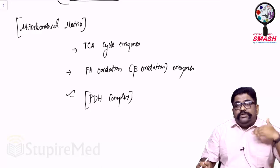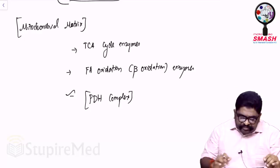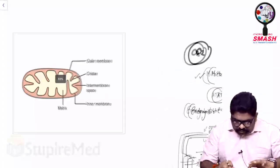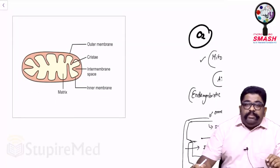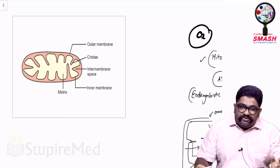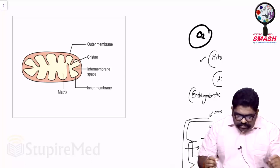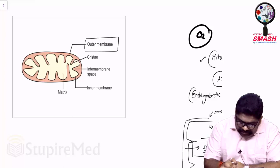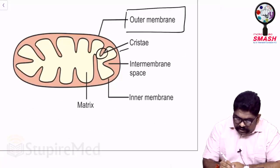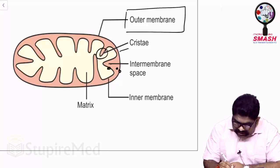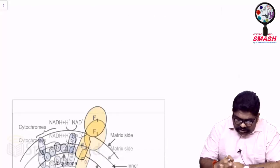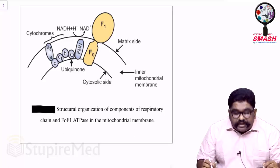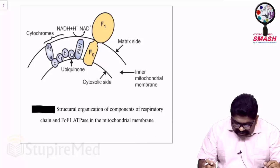Once you get the hang of the topic, you can introduce new information and expand it as widely and deeply as possible. Now we will look at pictures. I'll be discussing picture-based questions using pictures from standard books like Harper and Vasudevan. This picture is a representation of what I drew: we have the outer membrane, the cristae as projections, the intermembrane space between them, and the matrix. This is about the structural organization of components of the respiratory chain and F0-F1 ATPase in the mitochondrial membrane.